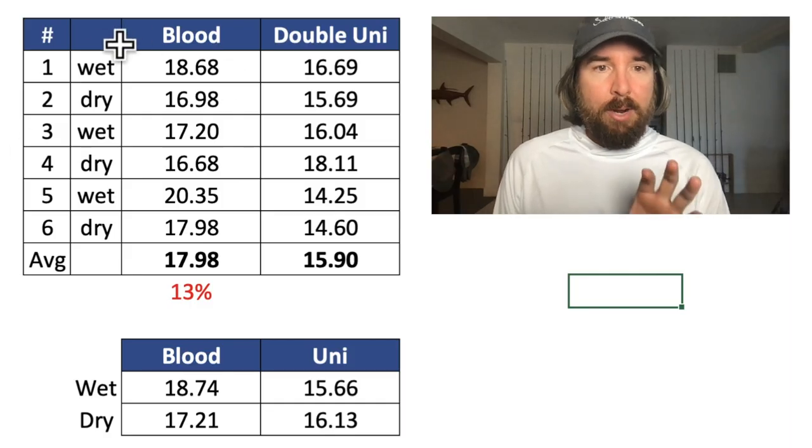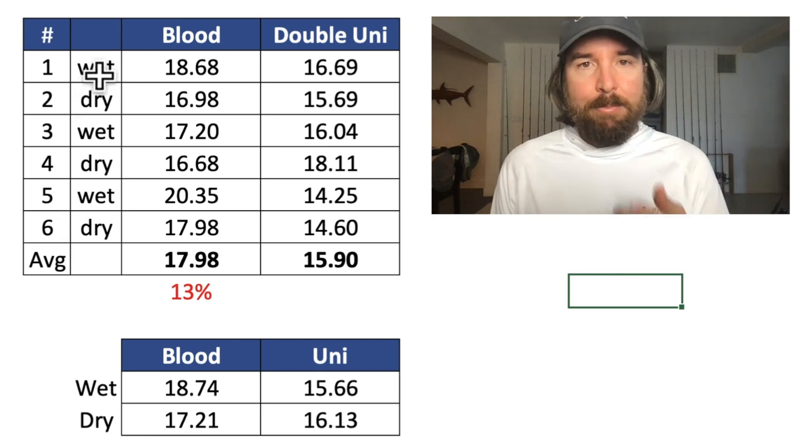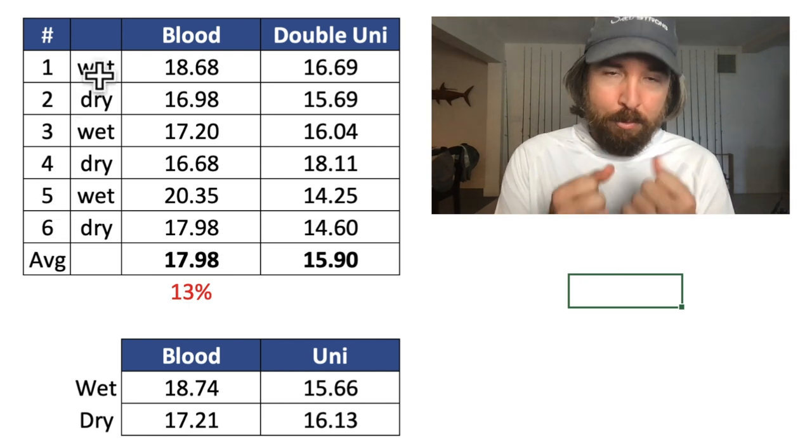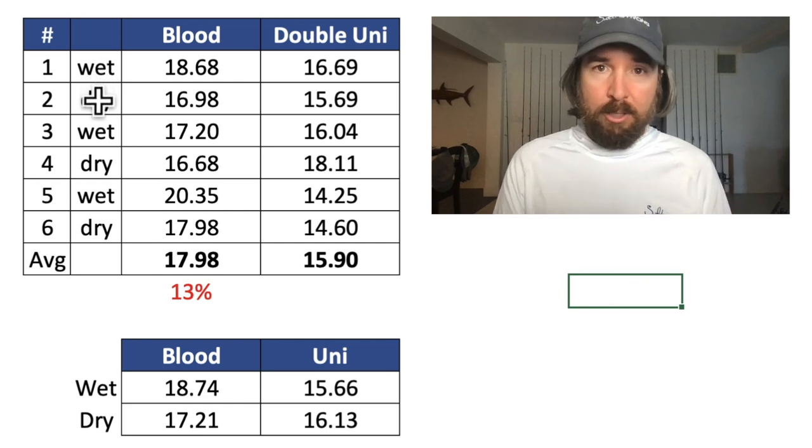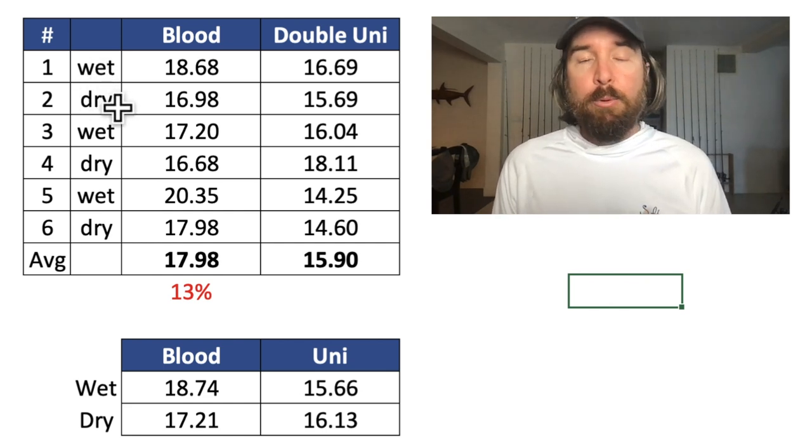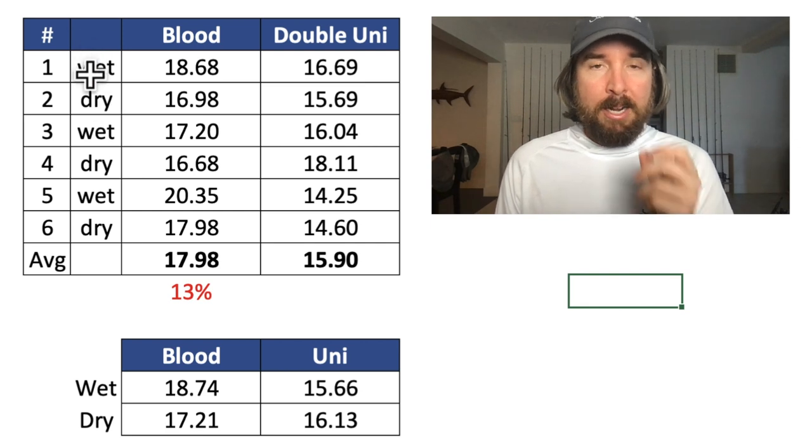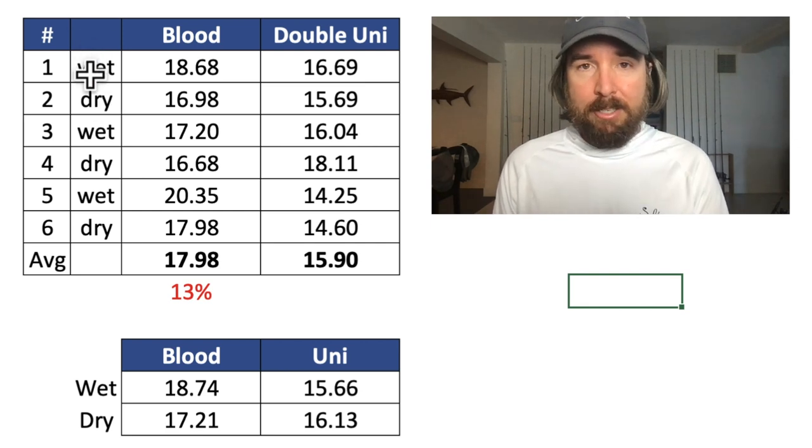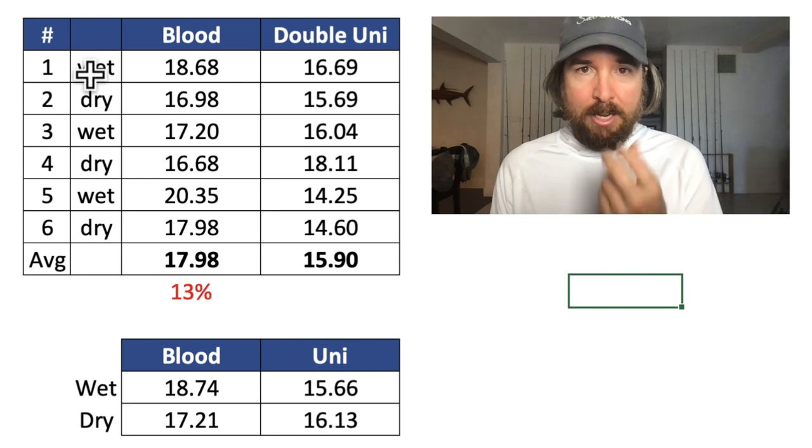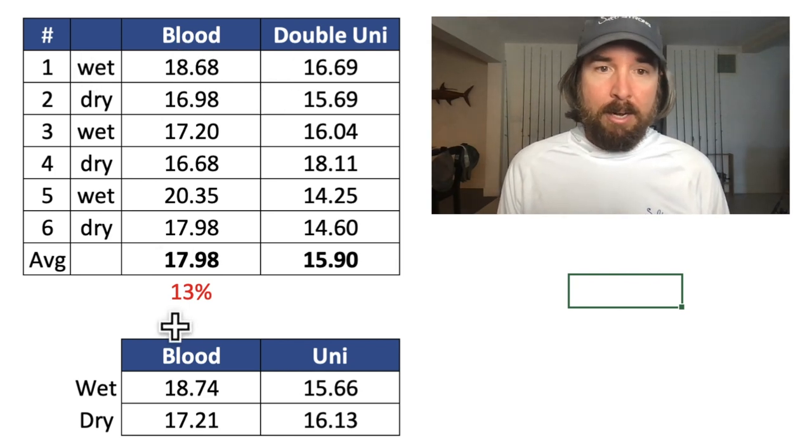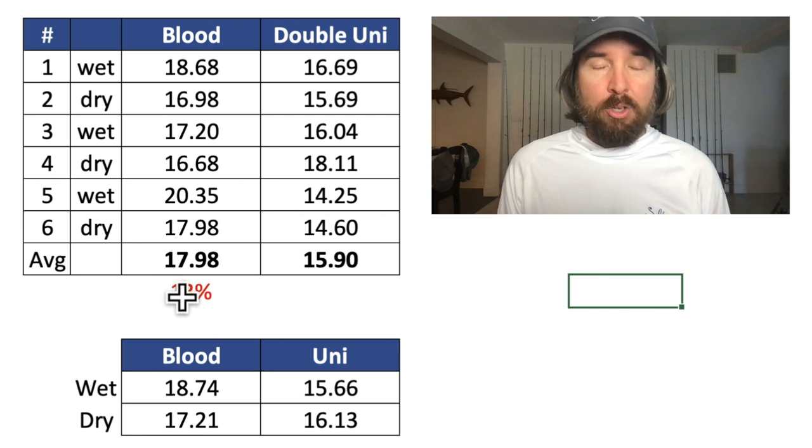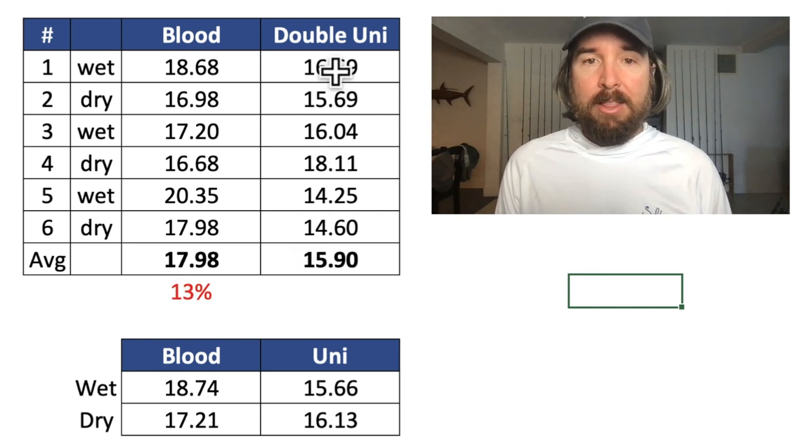Alright, here are the results. I did six runs - half were wet, meaning I used saliva before I cinched them down. The others I cinched down dry. Whether wet or dry, I soaked in water for exactly 10 seconds before breaking, just to make sure water was fully coating the knot. The blood knot did great - on average, it was 13% stronger than the double uni.